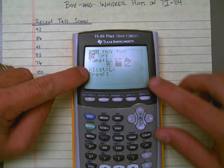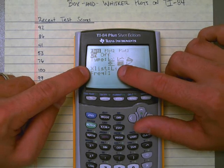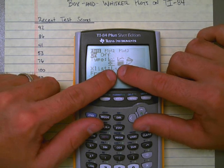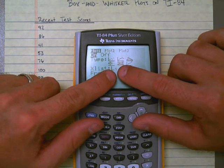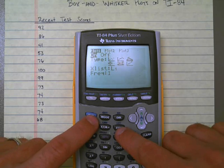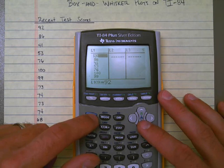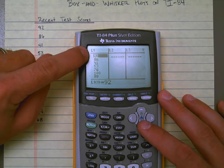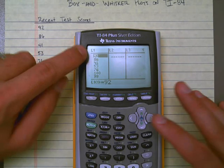It says, what do you want to use for your data values? And I'm saying list 1 is what I want to use. I know that I want to use list 1 because if I go back to the stat menu and I go to edit, notice it was list 1 is where I entered all my information. So I'm ready to go.